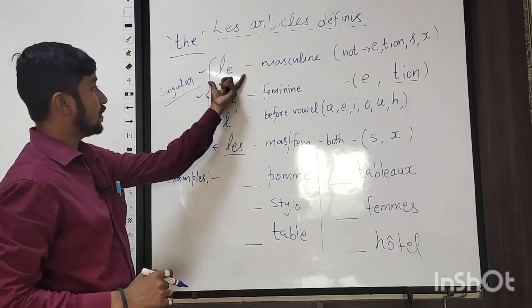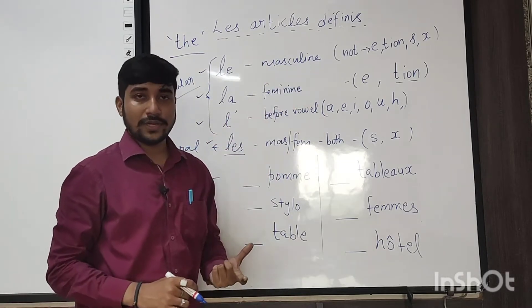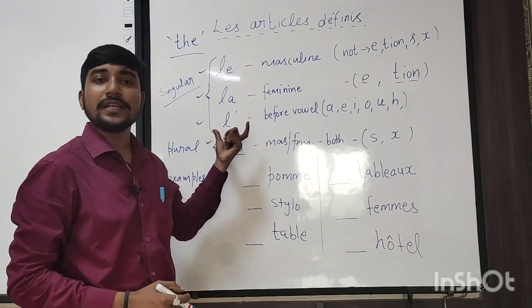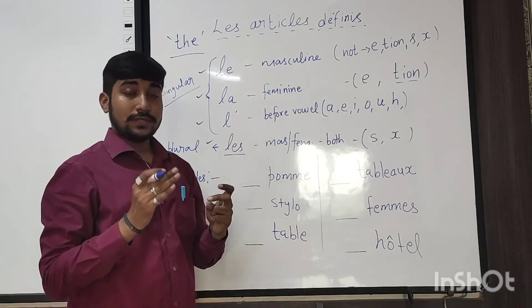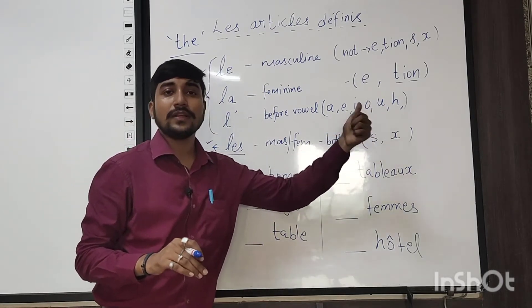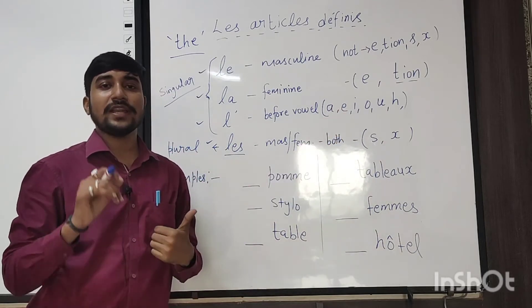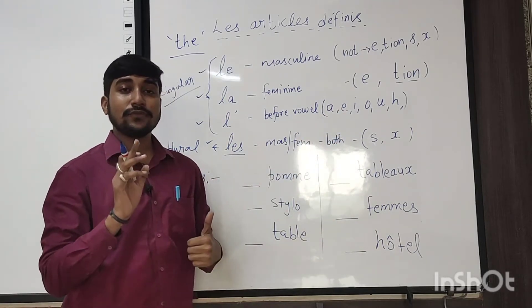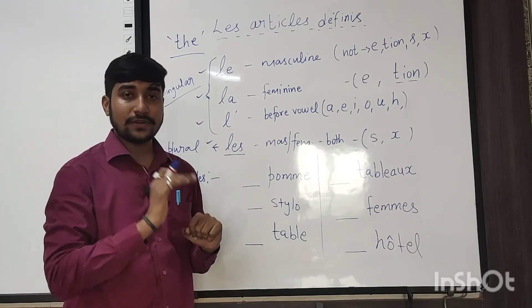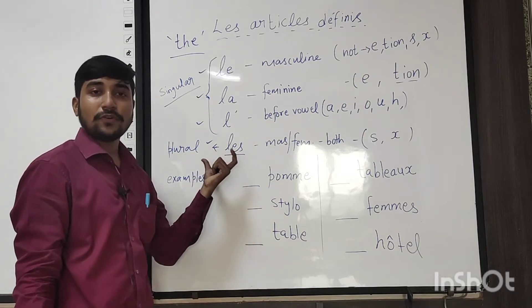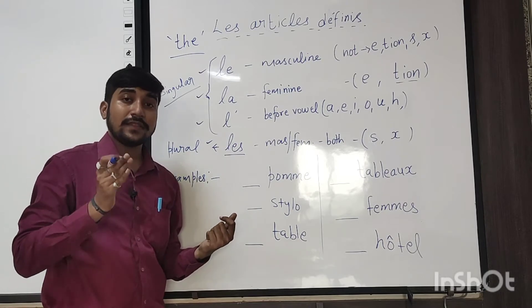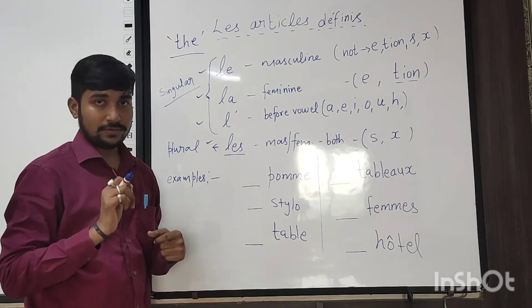Le is used for masculine words in French. La is used for feminine words. L'apostrophe is used for words that start with a vowel — a, e, i, o, u, h. These are the vowels of French. If a word starts with a vowel and is in singular form, we use l'apostrophe before that word. And les is used for plural words, whether masculine or feminine.